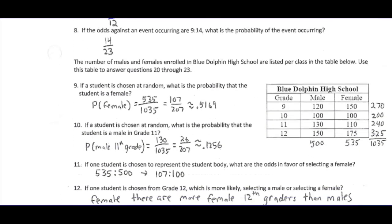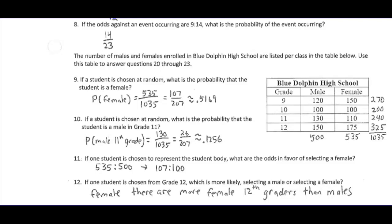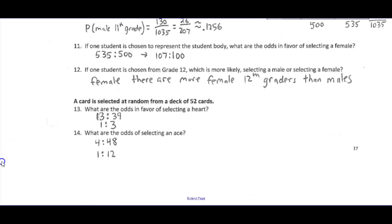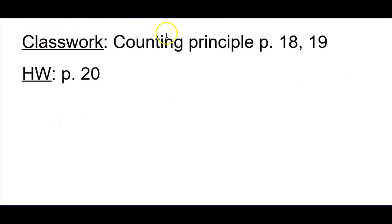The bottom section is number 8, and numbers 13 and 14. If you missed something, go back a little bit in the video to catch up, but please mark anything you did not understand or did not get right. The plan is to go over the counting principle from pages 18 and 19, then homework page 20, which you can start in class if there is time remaining.